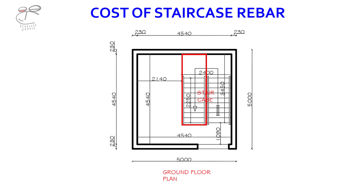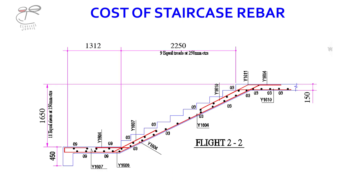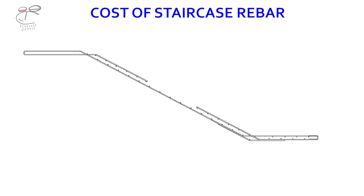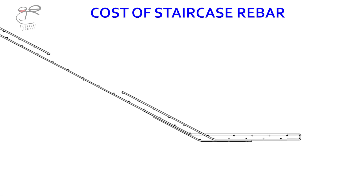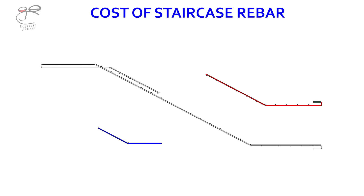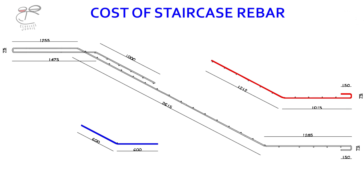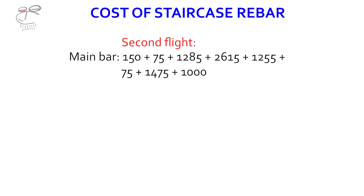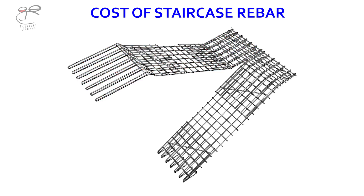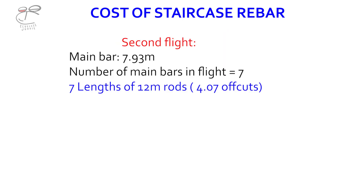Next, we move on to the second flight. These details are found in the bar bending schedule. If we break those apart, we've got three main bars to extrapolate. We'll take the main bar for the second flight and get the bending details from the bar bending schedule. Adding those specific values up gives 7.93 meters for the main bar in the second flight. The number of main bars in the flight is about seven, which means we need seven lengths of 12-meter rod.